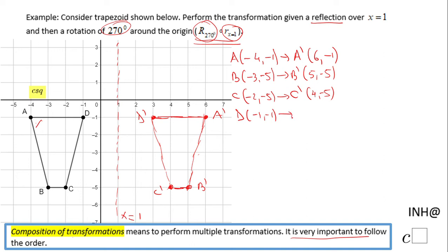Under this reflection, C becomes C prime which is 4 and negative 5, and D becomes D prime which is 3 and negative 1. And that was the first transformation. Now we're gonna do a rotation of 270, and like I said, this means counterclockwise.